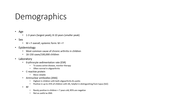Laboratory: erythrocyte sedimentation rate (ESR) to assess active disease and monitor therapy, often normal in oligoarthritis. C-reactive protein is more reliable. Anti-nuclear antibody (ANA) is highest in children with both oligoarthritis and uveitis, positive in up to 25% of children with JIA — careful, as it is indistinguishable from lupus. Rheumatoid factor: positive in less than 7 years old; 85% are negative. Not as useful as ANA.